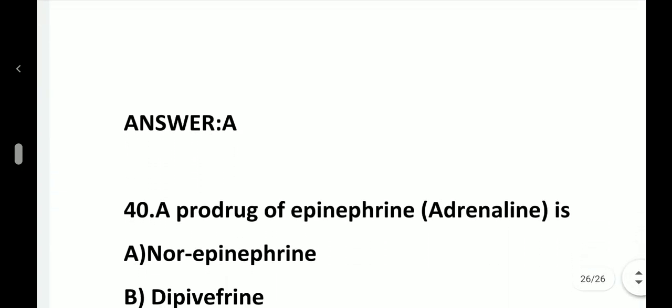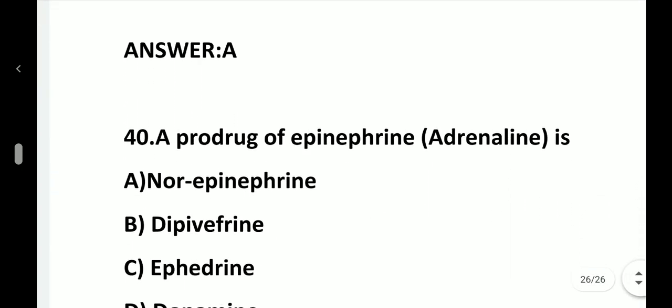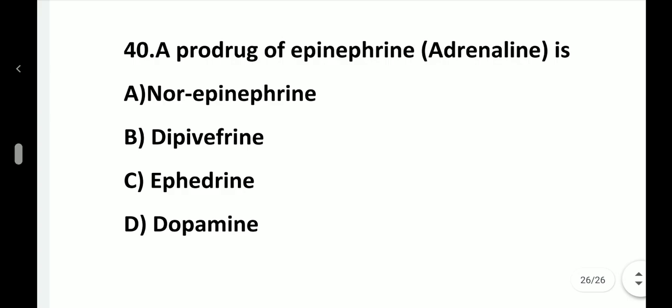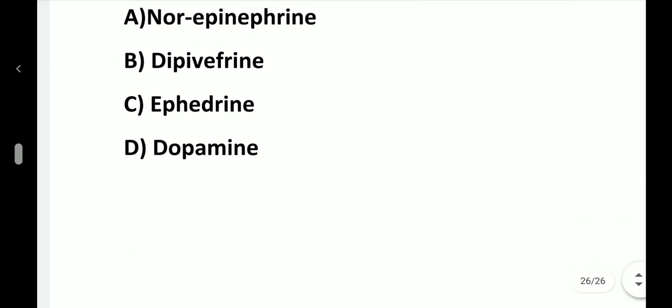Question number 40. A prodrug of epinephrine (adrenaline) is: option A, Norepinephrine; option B, Dipivefrin; option C, Ephedrine; option D, Dopamine. Answer is option B, Dipivefrin.